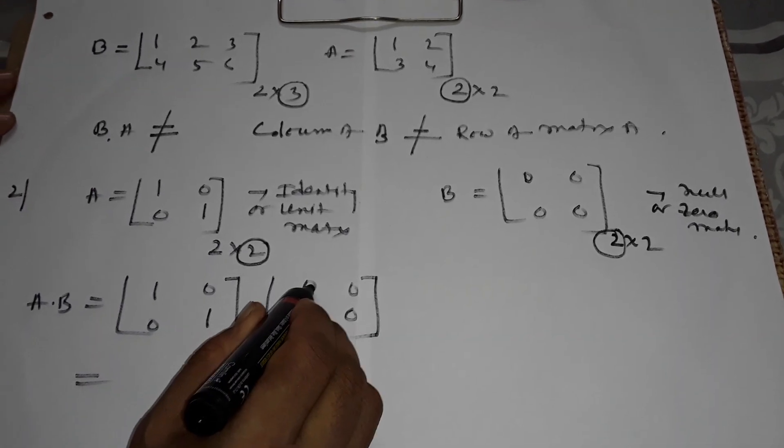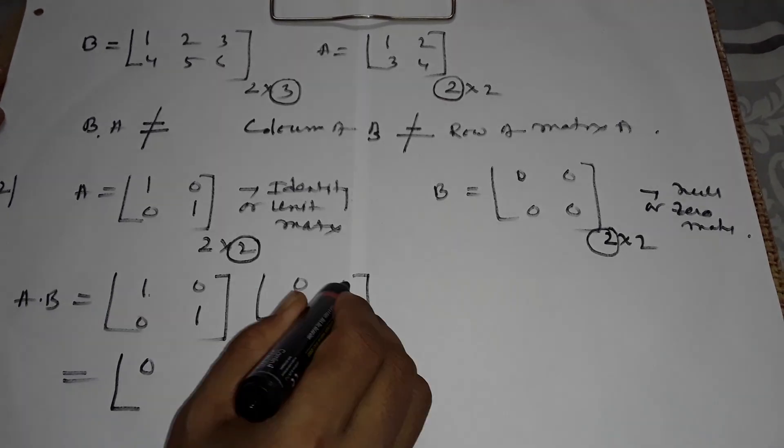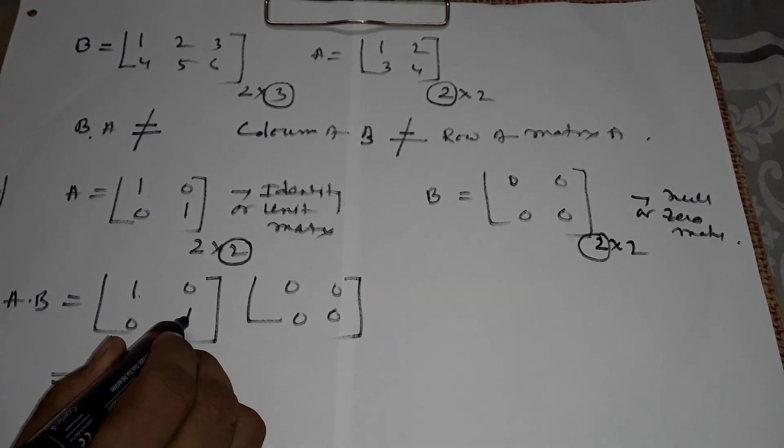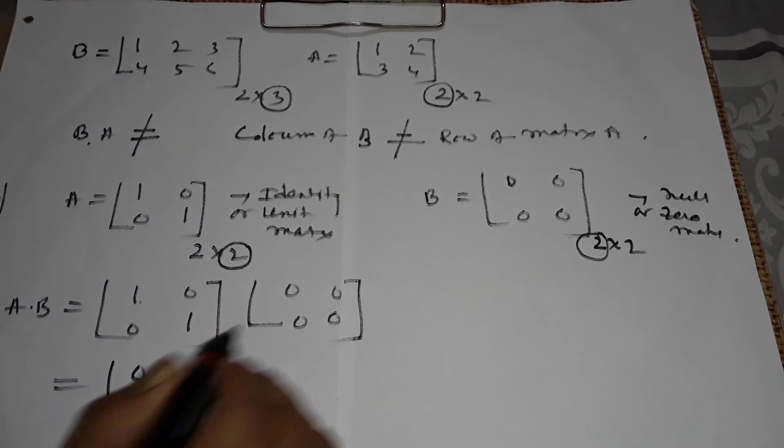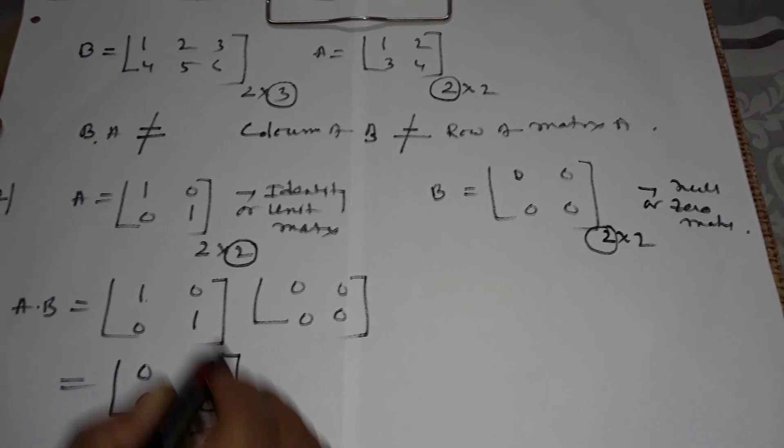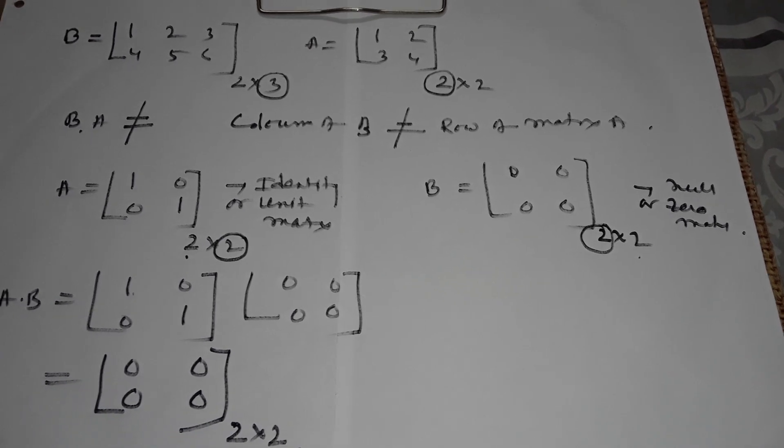1 into 0 means 0 plus 0 into 0, 0. 1 into 0 plus 0 into 0, 0. 0 into 0, 0 plus 1 into 0, 0. Plus 0 into 0 plus 1 into 0, this 0. Order is 2 into 2. OK, my student.